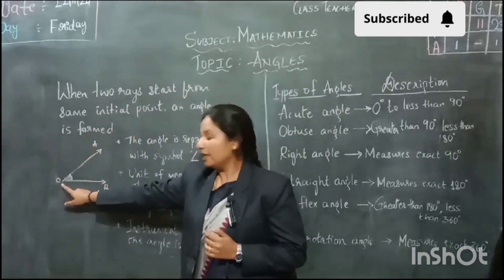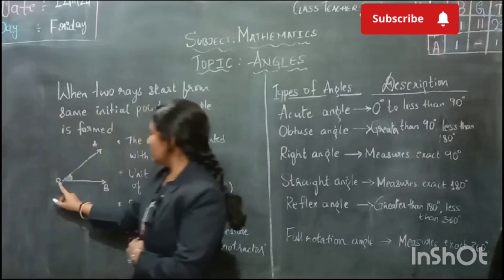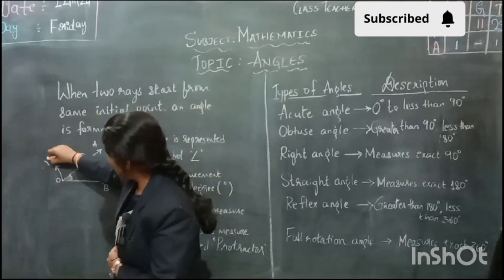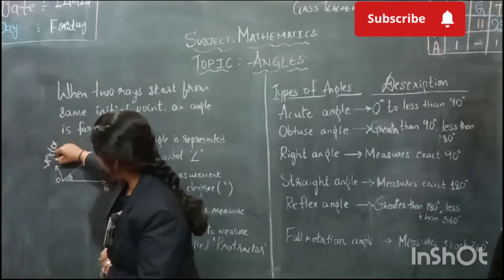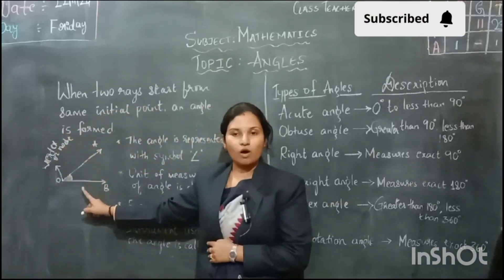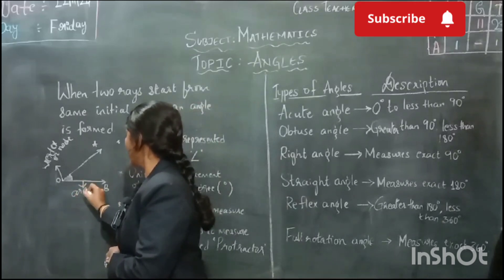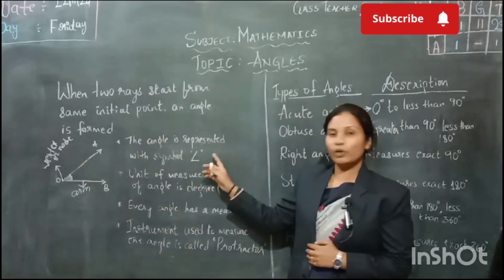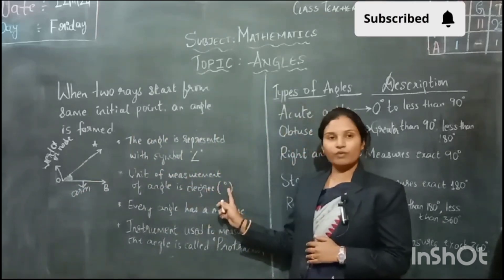This is the initial point. These are the two rays. This initial point or the common point is called the vertex, or it's known as a node, and these two are called the arms of the angle. The angle is represented with this symbol and the unit of measurement of angle is degree, which is represented with this symbol.